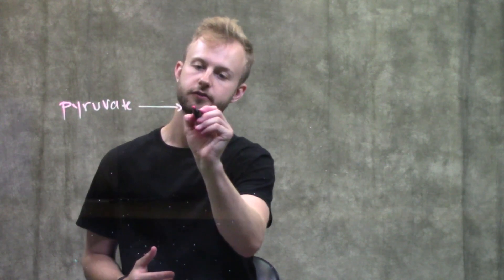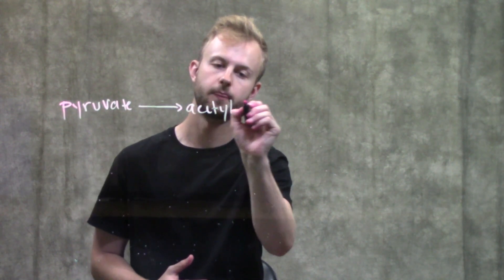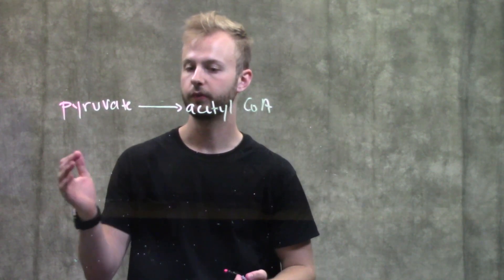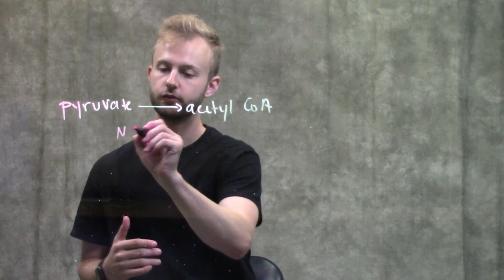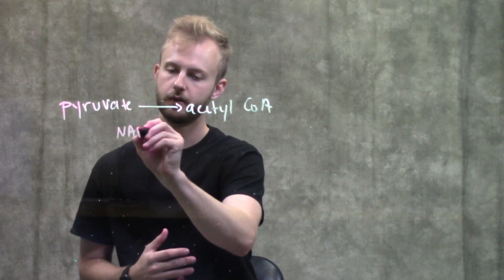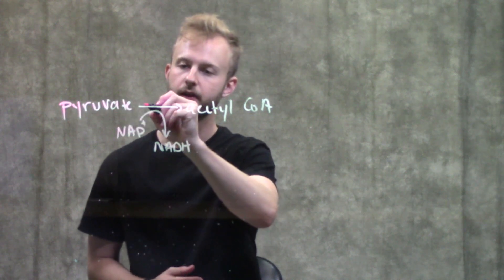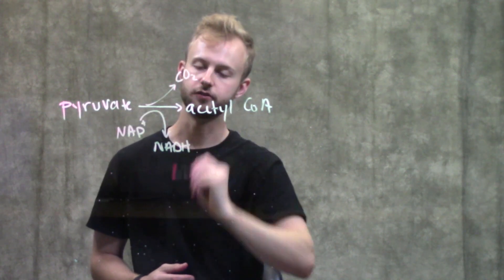So what's going to happen is we're going to convert our pyruvate to acetyl-CoA. And this acetyl-CoA is what will actually get fed into the citric acid cycle. But when we do this, we're going to produce some byproducts. So we're going to make one molecule of NADH per pyruvate, as well as one molecule of CO2.